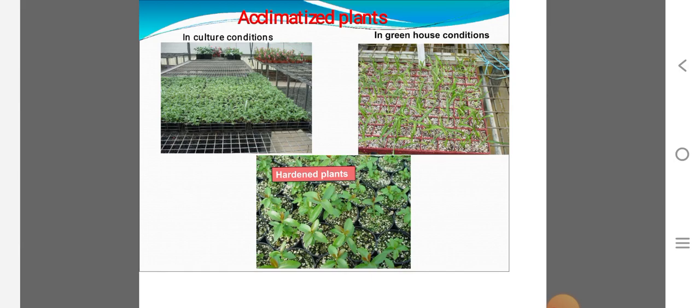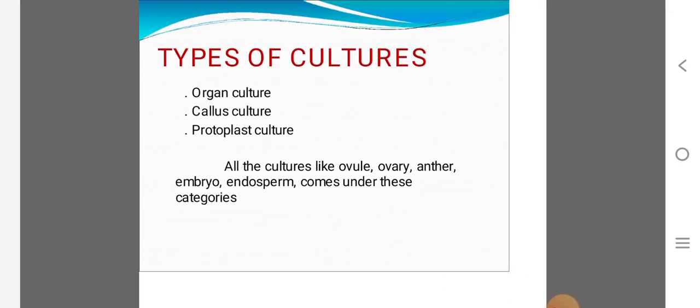You can use the culture conditions, then greenhouse conditions. If you are using hardening, you can use the plantlets to grow. You can use the types of cultures.